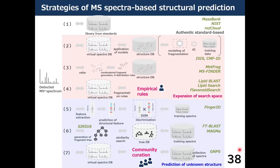This slide shows the strategies for MS spectra-based structure prediction. The most basic approach is the collection of MS spectra obtained from authentic standards measurement. Libraries such as MassBank, NIST, and the website mzCloud are categorized here. However, the availability of authentic standards is quite limited, so other approaches to enlarge library size — based on chemical structures stored in compound databases — have been proposed. For creating virtual spectral databases, machine learning technologies and calculation of chemical bond energies are applied. In recent years, empirical rules for cleavage of molecules in specific compound categories have also been applied. A good example is lipids, and we have also developed a prediction system for flavones.